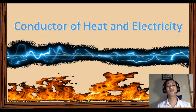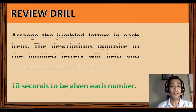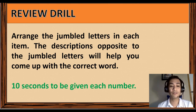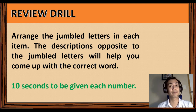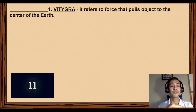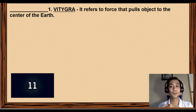For our review drill, arrange the jumbled letters in each item. The descriptions opposite the jumbled letters will help you come up with the correct words. I'll be giving you 10 seconds for every question, so just prepare your pen and paper. For the first question: it refers to the force that pulls objects to the center of the earth. Time starts now.